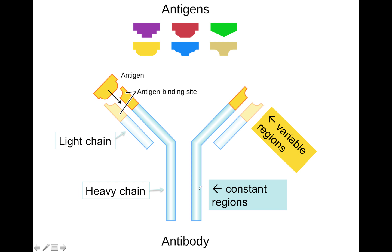Antibodies are made up of a pair of heavy chains and a pair of light chains. The heavy chains and the light chains have constant regions that are the same in all immunoglobulins, and they also have variable regions. The variable regions are the antigen binding sites. Notice that the antigen binding sites are comprised of parts of both the light chain and the heavy chain — they have to combine in order to make the antigen binding sites. These regions vary from B cell to B cell, so that you have a wide variety of antibodies that can neutralize many different types of antigens.